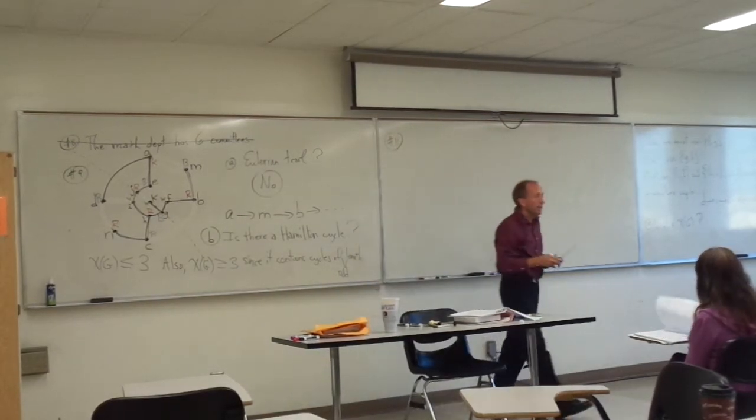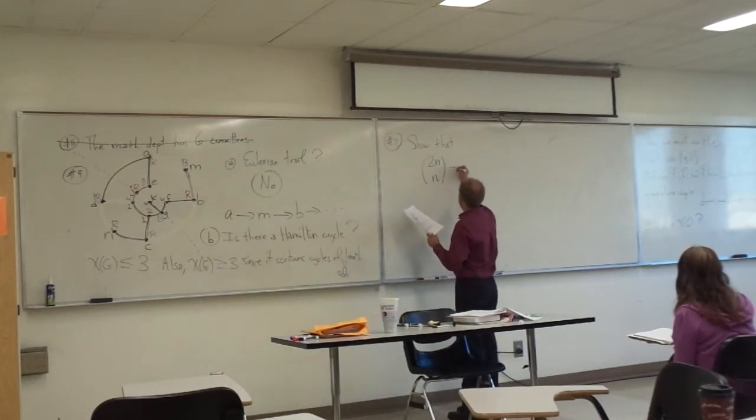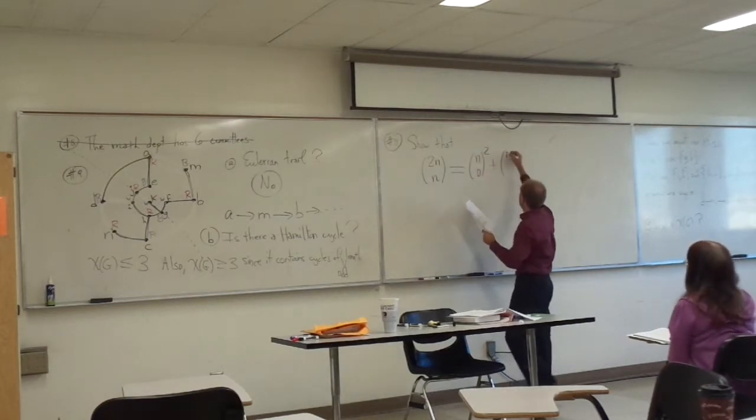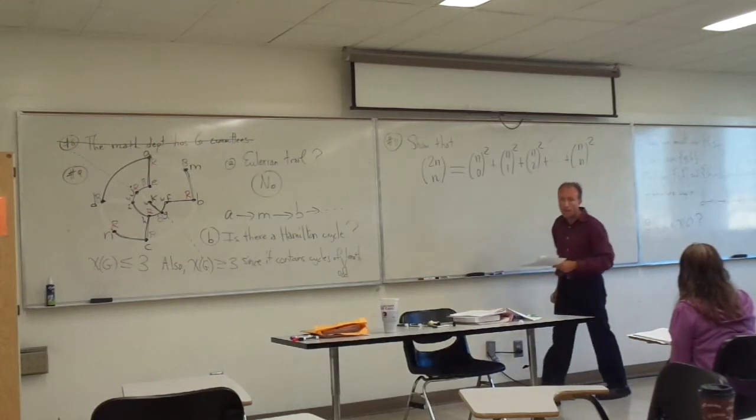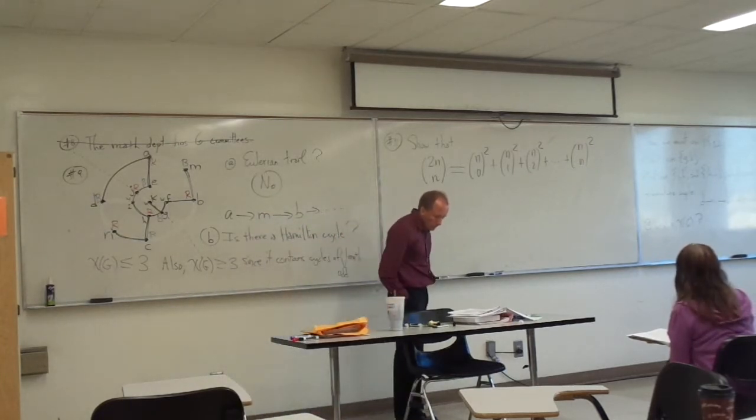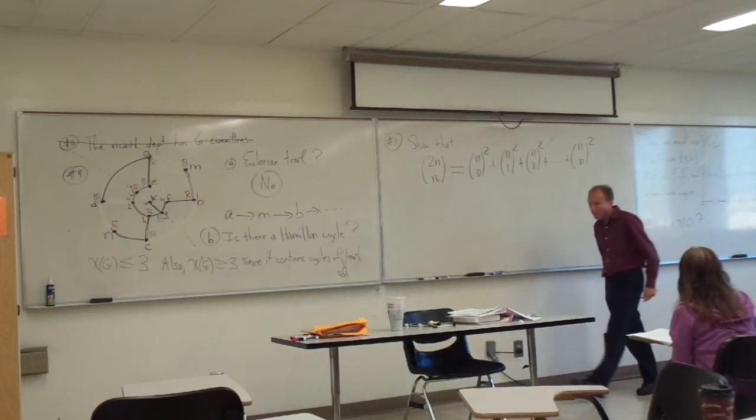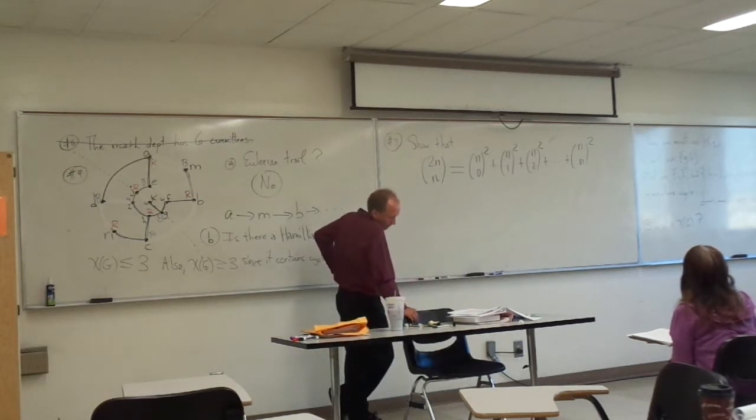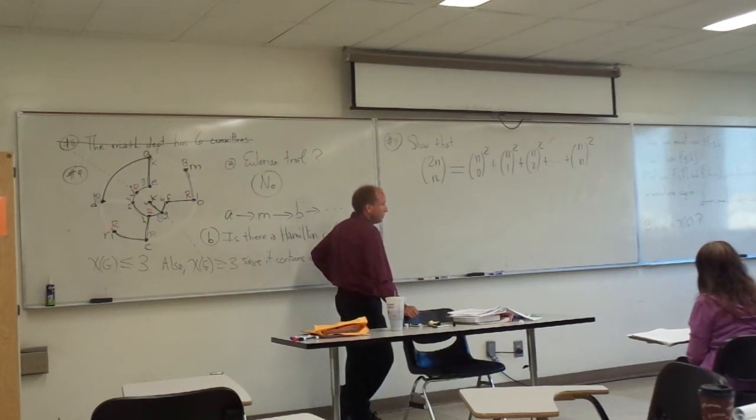Show that 2n choose n is equal to n choose 0 squared plus n choose 1 squared plus n choose 2 squared plus dot dot dot plus n choose n squared. Let's see if we can figure this out. Any ideas?